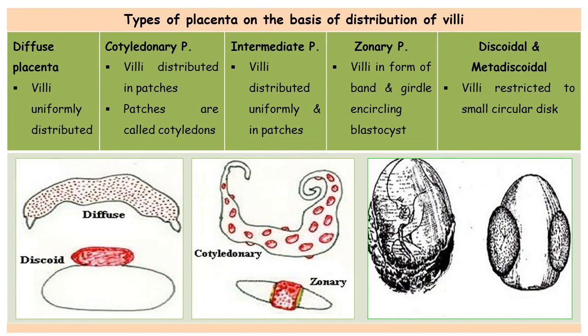The next division of placenta depends on the distribution of villi. On this basis, placentas are divided into six types. The first category is the diffuse type, where the villi are uniformly distributed all over the surface of the allantochorionic placenta. This type is observed in pigs and horses. In the figure shown, the dot-like structures represent the diffused villi uniformly distributed over the entire placenta.